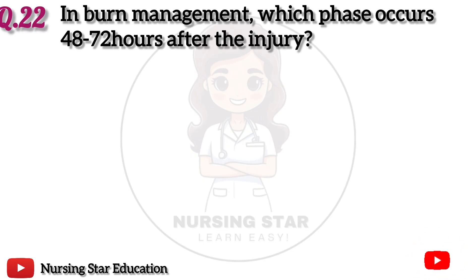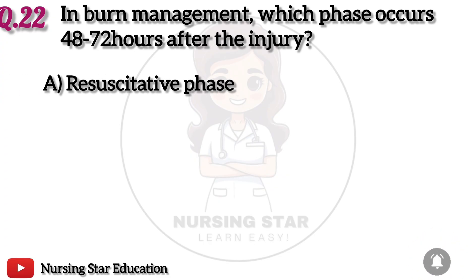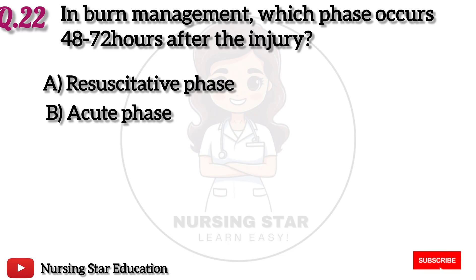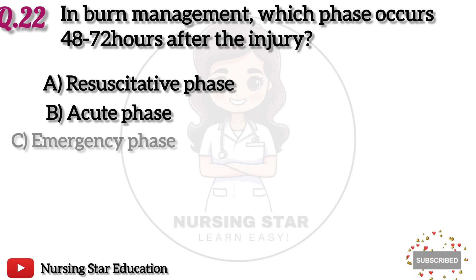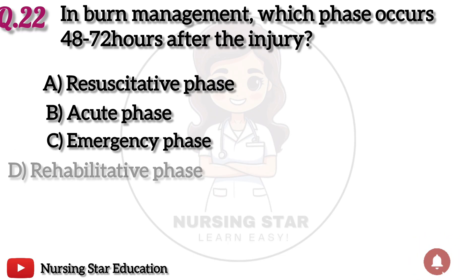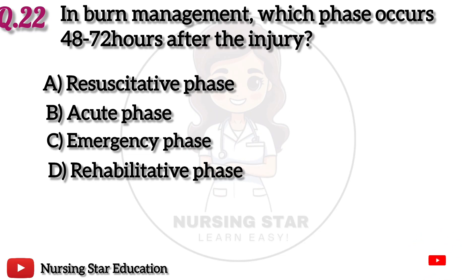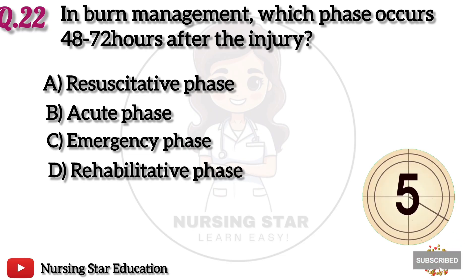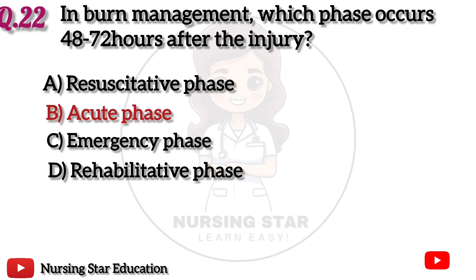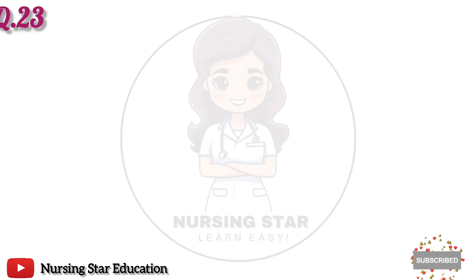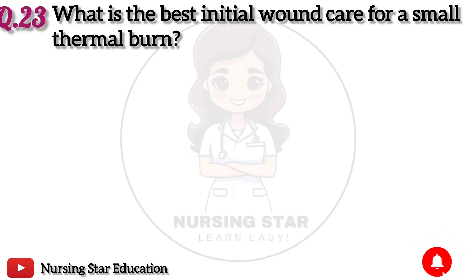Question 22: In burn management, which phase occurs 48–72 hours after the injury? Option A: Resuscitative phase. B: Acute phase. C: Emergent phase. D: Rehabilitative phase. The correct answer is B: Acute phase.